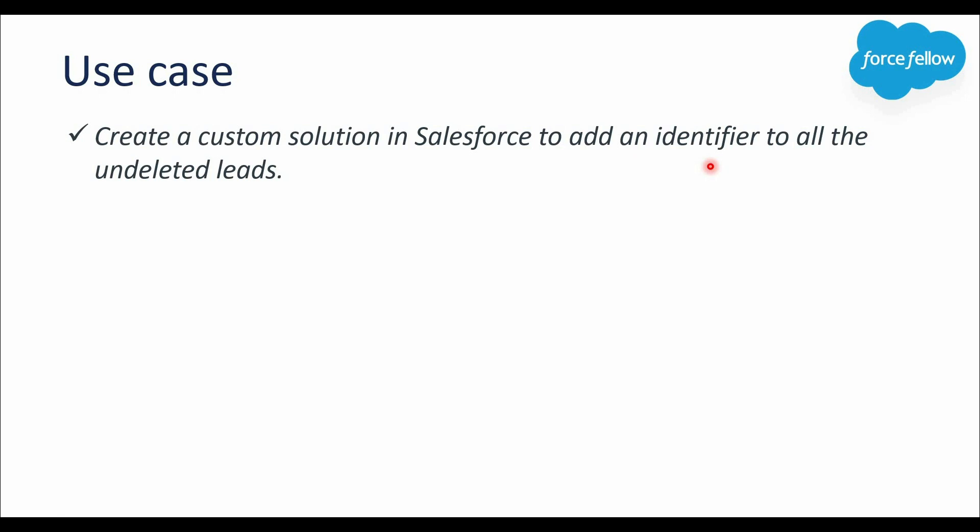The next question is: how do we add that identifier to lead records? We can simply create a custom field, and whenever any lead record gets restored, we can update the value in that field. Later, to identify or filter all the undeleted records, we can use this same field. This is how we can distinguish whether a lead is fresh or restored. This requirement can only be achieved using Apex triggers — no other automation tools, including flows, can help.